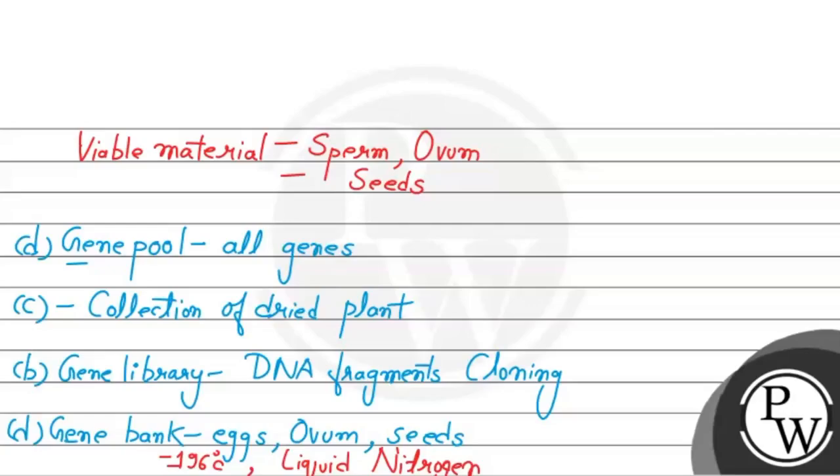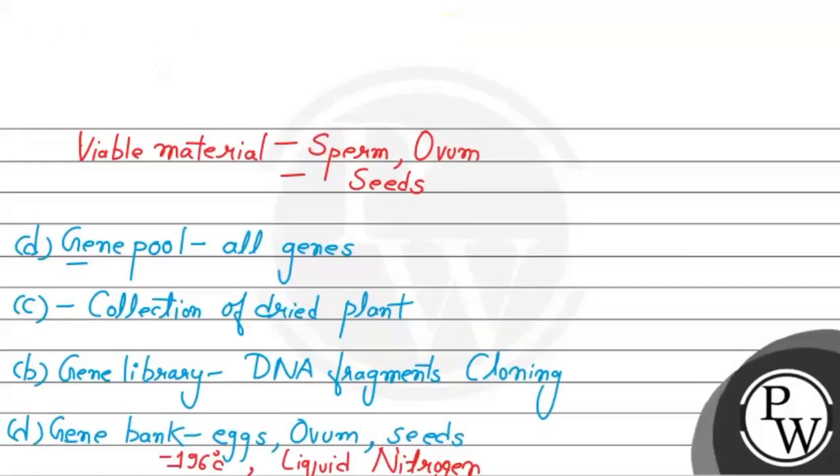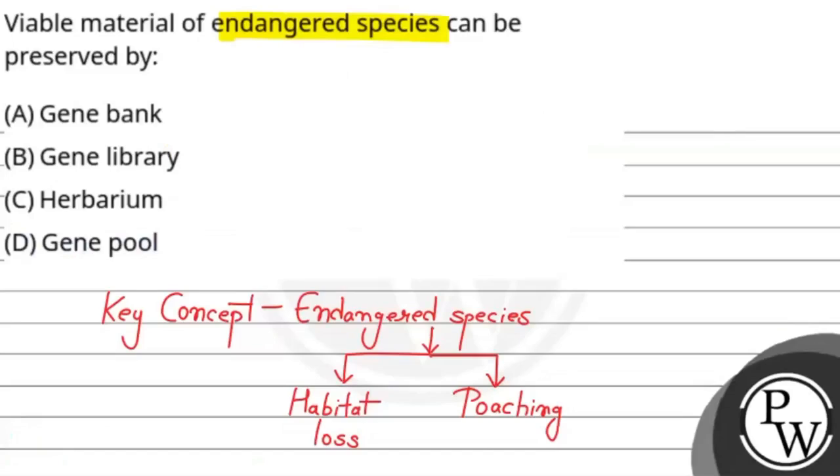Now let's see the question. What was the question? Viable materials of endangered species can be preserved by them, and the correct option is gene bank. With the help of gene bank we store eggs, ovum, and seeds. We provide an environment so that it can be preserved, and if we use it we will not face extinction. Using gene bank we can create new species and organisms in the same way as the endangered organism. So the correct answer is gene bank. Hope you understand it well. Best of luck.